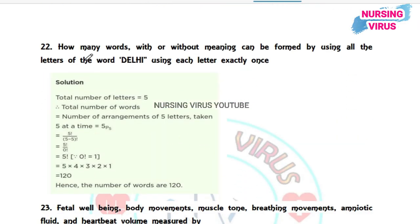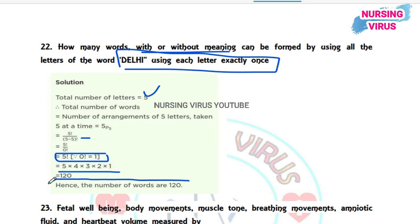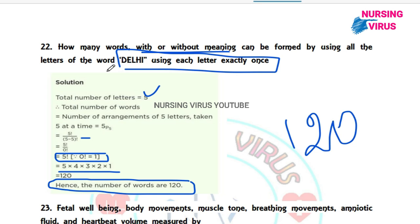Question 22 (Aptitude): How many words, with or without meaning, can be formed using all letters of the word DELHI, using each letter exactly once? The total number of letters is five. The number of arrangements is 5P5 = 5! = 5 × 4 × 3 × 2 × 1 = 120. Therefore, 120 words can be formed from the letters of DELHI.